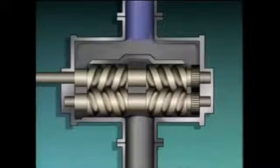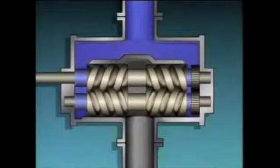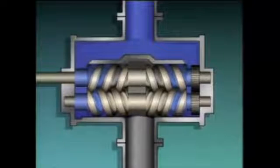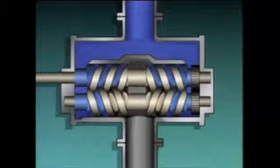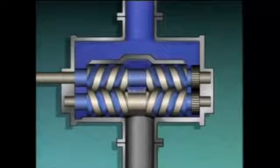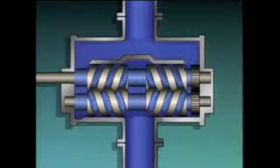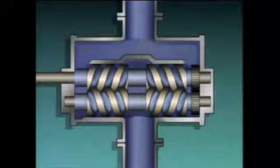During operation, process liquid enters the suction of the pump and is directed toward both ends of the casing. As the screws rotate, the liquid becomes trapped between the casing and the screws. The liquid is moved from both ends of the pump toward the center, which is also the discharge of the pump. The force exerted by the screws pushes the liquid out of the pump and through the discharge piping.